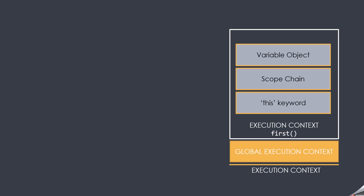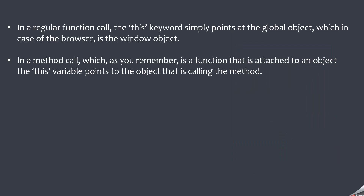We have already talked about this variable in the objects lecture. Now, in a regular function call, the this variable simply points to the global object. In the case of a browser, the global object is the window object. So in case of a regular function call, this variable will point to the window object. And in case of a method call, this variable will point to the object on which that method is called.